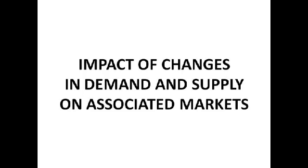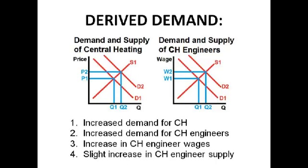Moving on to the impact of changes in demand and supply on associated markets — essentially derived demand, complementary products, and joint supply. First, derived demand is the effect of the consumer goods market on the factor market. Here, the consumer good is central heating and the factor is labour. If there's an increased demand for central heating, there will be an increased demand for central heating engineers.